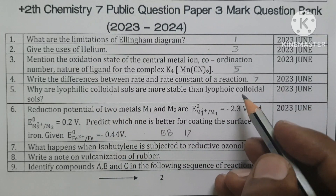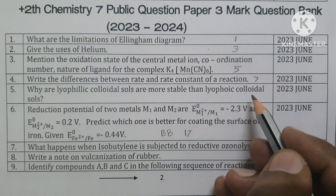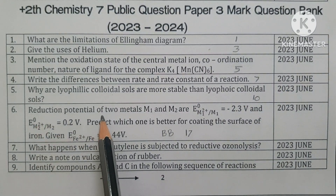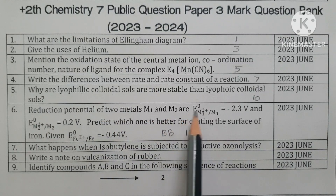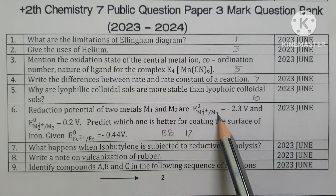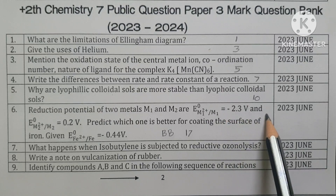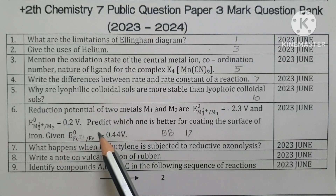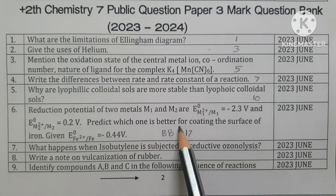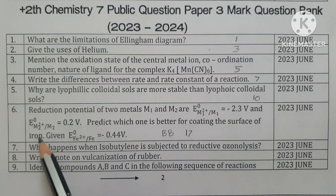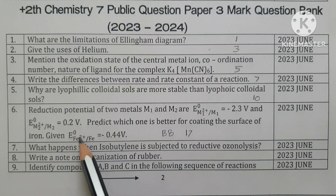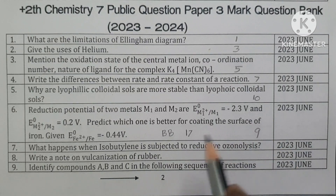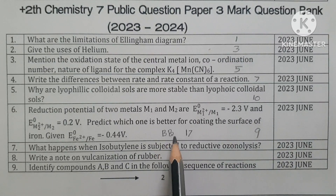Electrochemistry problem: Given E0(M1²⁺/M1) = −2.34 V and E0(M2²⁺/M2) = +0.2 V, predict which one is better for coating the surface of iron. Also given: E0(Fe²⁺/Fe) = −0.44 V. Unit 9, textbook question number 17.